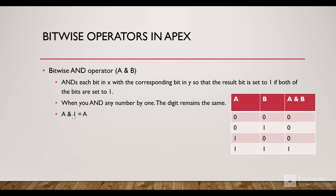An important point of the bitwise AND: when you AND a number by 1, it returns the same number — the digit remains the same. Let's say we are using an AND operation on 0 and B is 1, the answer would be A. And when A and B are both 1, the answer is 1. So A AND 1 will equal A.